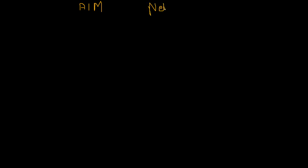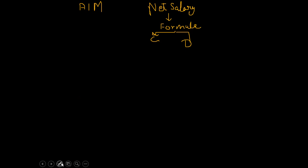The first thing we have to see is what is basically the aim of my program. The aim of my program is to find the net salary. So the next thing that arises is: what is basically the formula for finding the net salary? We have to look at the formula for finding the net salary of an employee.